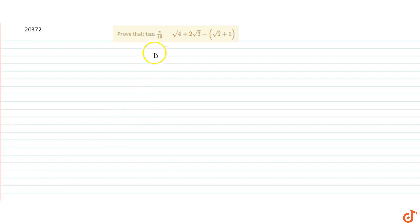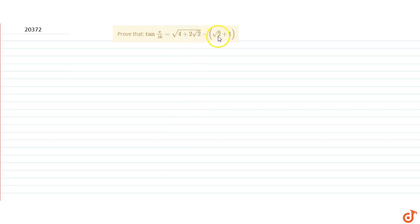In this question we have to prove that tan(10π/16) is equal to the square root of 4 plus 2 root 2 minus 2 root 2 minus 1. We will start with the left hand side, that is tan(π/16).